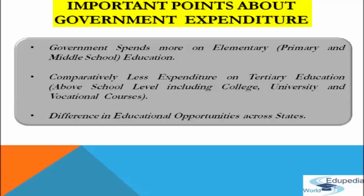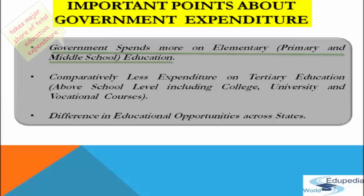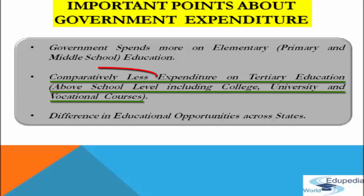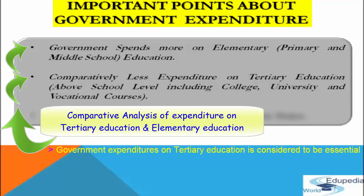Some important points regarding government expenditure: the government spends more on elementary education. Elementary education — that is, primary and middle school education — takes a major share of total education expenditure. The share of higher or tertiary education, such as colleges, polytechnics, and universities, is the least.